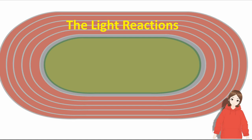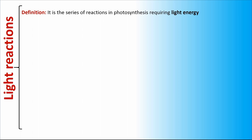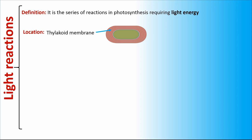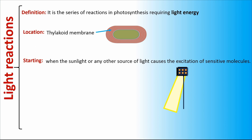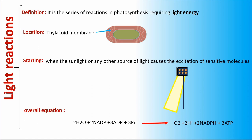Light Reactions is a series of reactions in photosynthesis requiring light energy. It occurs in the thylakoid membrane. Light Reactions start when sunlight or any other source of light causes the excitation of sensitive molecules. The overall equation is: 2 H₂O + 2 NADP⁺ + 3 ADP + 3 inorganic phosphate converts to O₂ + 2 protons + 2 NADPH + 3 ATP.